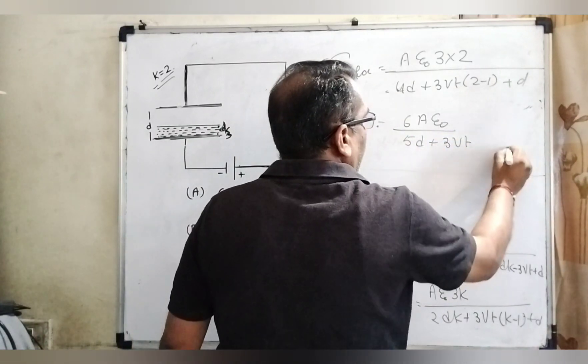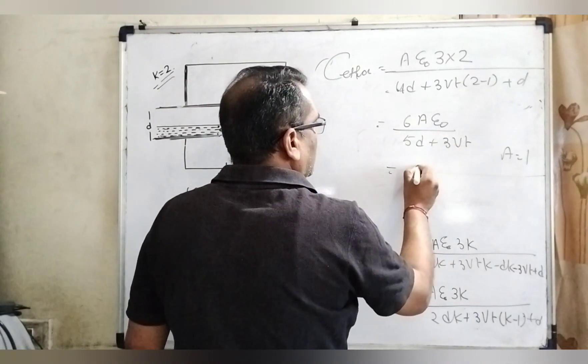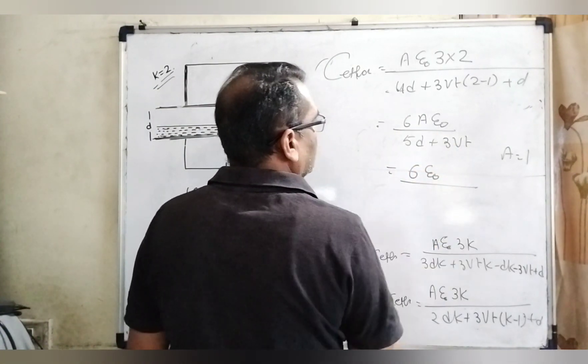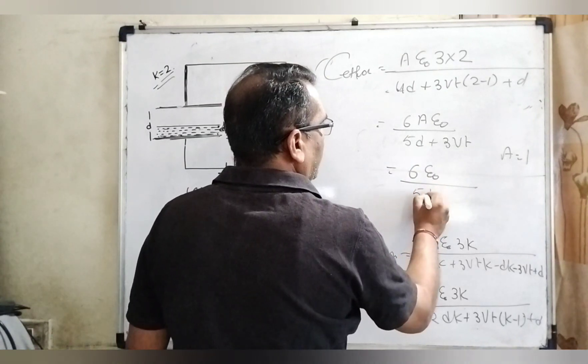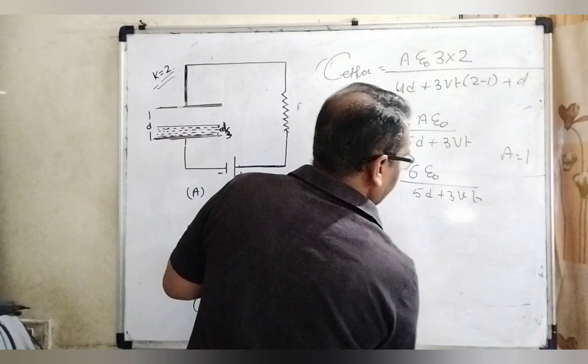Here, given A is a unit area, so A put here 1. So 6 epsilon 0 over 5d plus 3Vt. It is the effective capacitance.